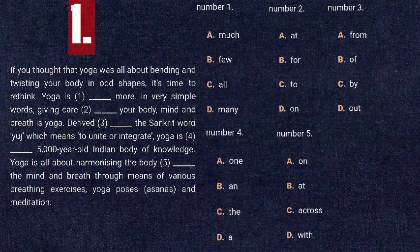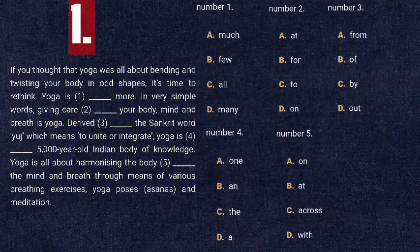For blank number three — 'derived [blank] the Sanskrit word' — the options are: of, by, out, from. Since the sentence indicates origin, 'of,' 'by,' and 'out' are out of context. 'From' is the correct answer: 'derived from the Sanskrit word,' meaning we are talking about the origin of the word 'yoga.'